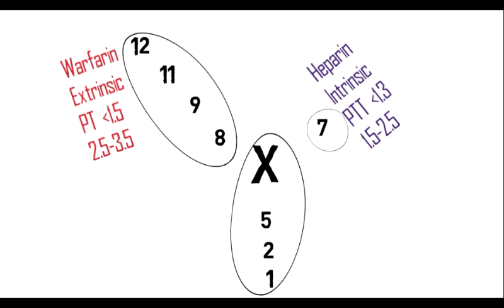When one uses heparin, it acts on the intrinsic system by prolonging the partial thromboplastin time, and the target to raise it is 1.5 to 2.5 times normal.